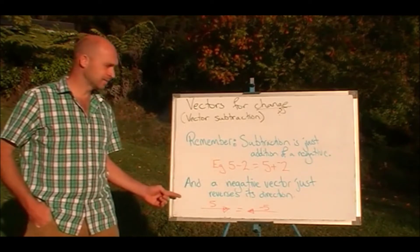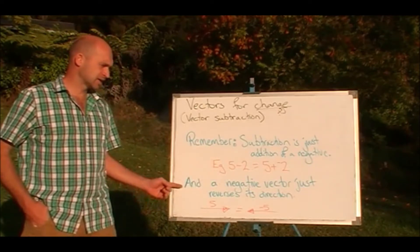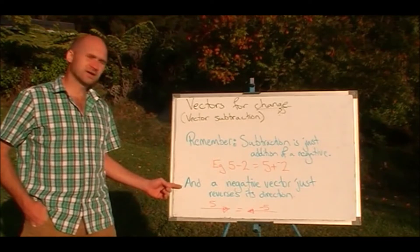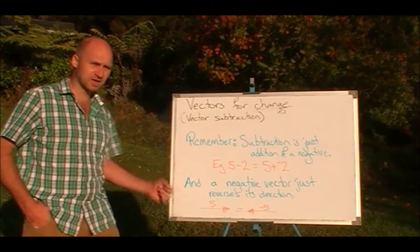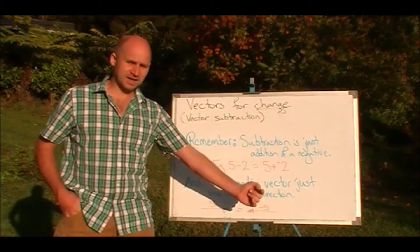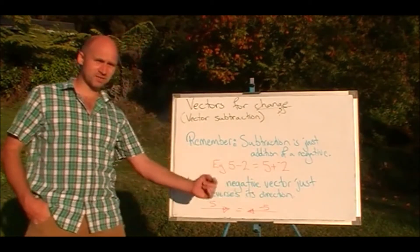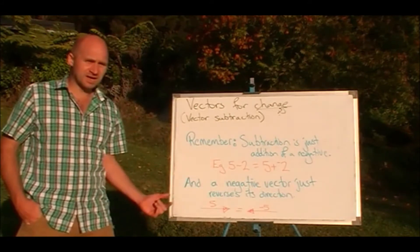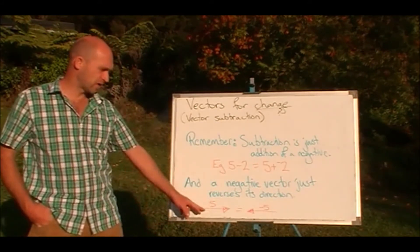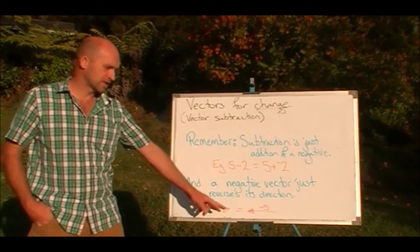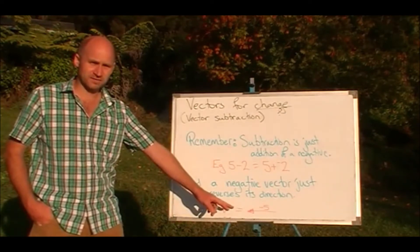Second thing is that a negative vector is just a reversal of direction. In the same way that a positive number goes up the number line and a negative number goes down the number line, with a vector, if it's negative, we can just reverse the direction.